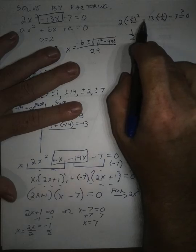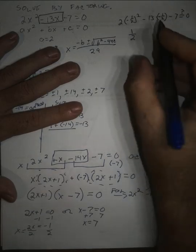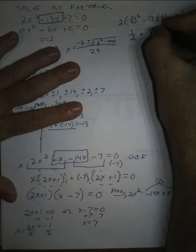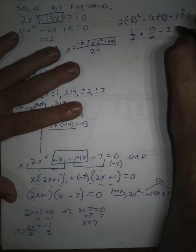This is negative times negative, so it's going to be positive 13 halves, so plus 13 halves minus 7. Now, 7 is over 1,